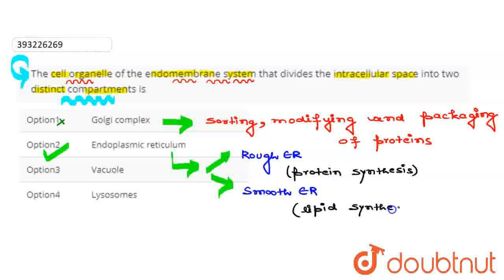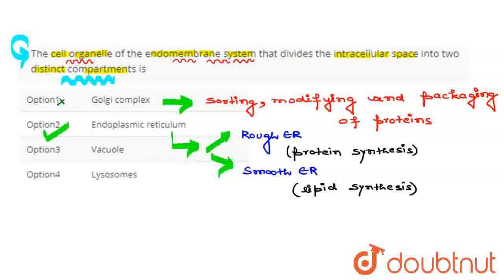After that, third option जो दिया गया है vacuole, तो यह option भी यहाँ पे गलत होता है. Vacuoles involved होते हैं in maintaining osmoregulation.